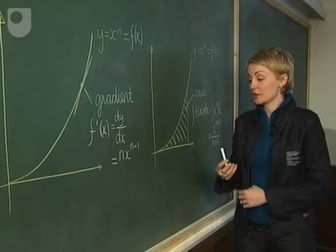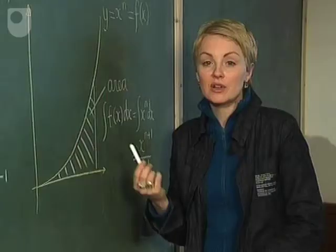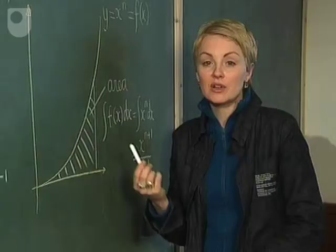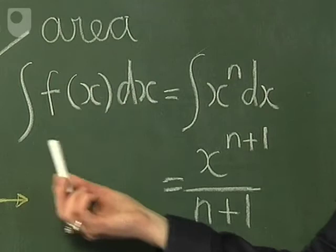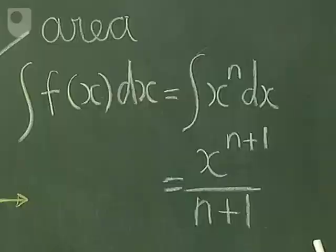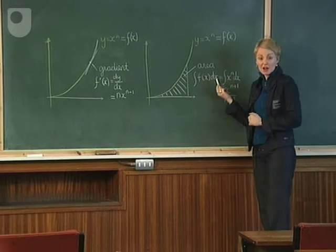Also, if we want to find the area under a curve, this time you use Leibniz's long s — the integral notation. And again, there are many standard formulas. The remarkable thing about this is that these two are actually related. In fact, to find the area formula, you work backwards from the gradient formula. And this is what Leibniz and Newton discovered.